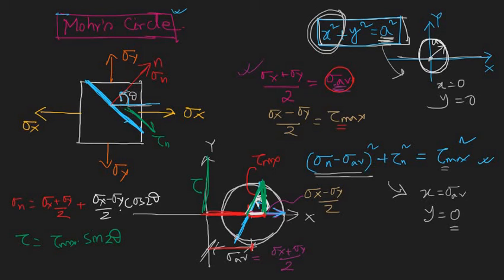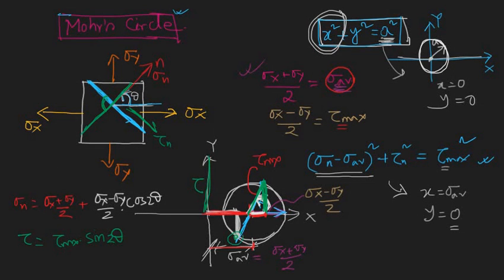A diametrically opposite point on the circle represents the complementary stress state — the stresses on a plane at 90° to the original plane. That's why complementary points are diametrically opposite on Mohr's circle.